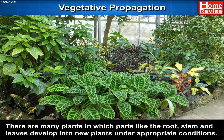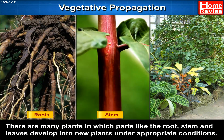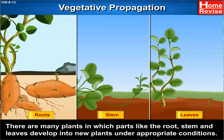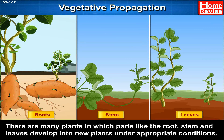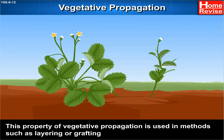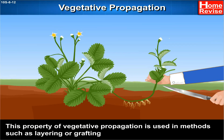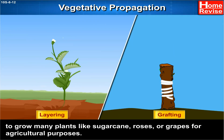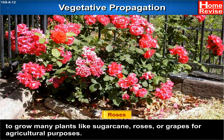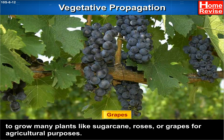There are many plants in which parts like the root, stem, and leaves develop into new plants under appropriate conditions. Unlike in most animals, plants can indeed use such a mode for reproduction. This property of vegetative propagation is used in methods such as layering or grafting to grow many plants like sugarcane, roses, or grapes for agricultural purposes.